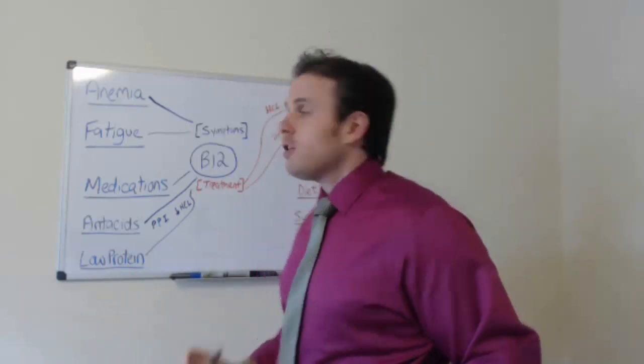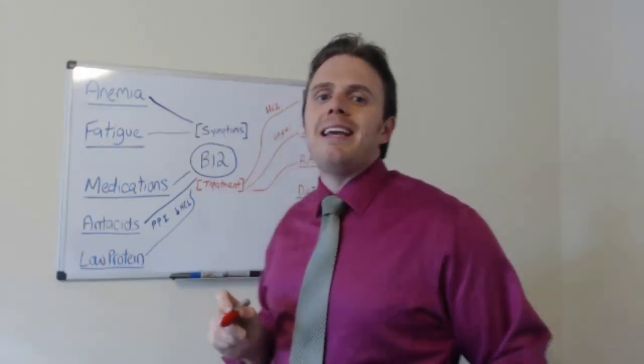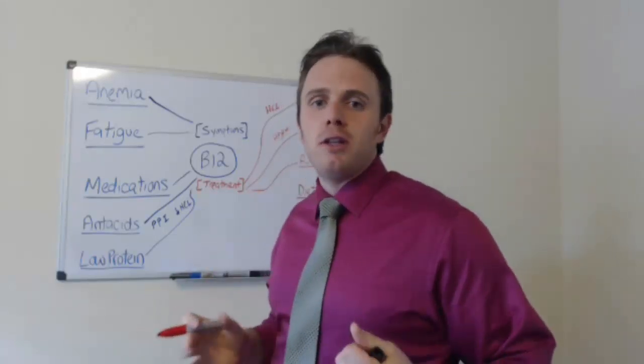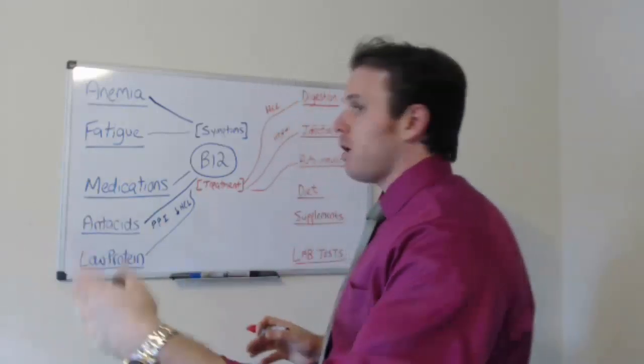Next, autoimmunity. There's such things as a pernicious anemia. Pernicious anemia is an anemia from an autoimmune condition that's causing a chronic B12 issue. It's pernicious. It continues to go forward, ongoing.